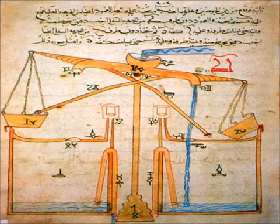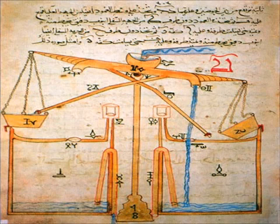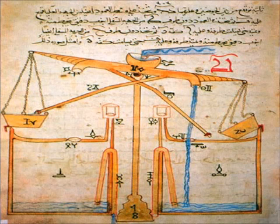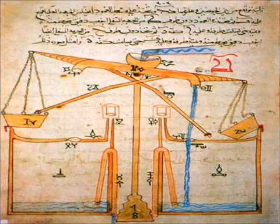In his Aporias against Ptolemy, Ibn al-Haytham commented on the difficulty of attaining scientific knowledge: truth is sought for itself, but the truths, he warns, are immersed in uncertainties, and the scientific authorities, such as Ptolemy, whom he greatly respected, are not immune from error.